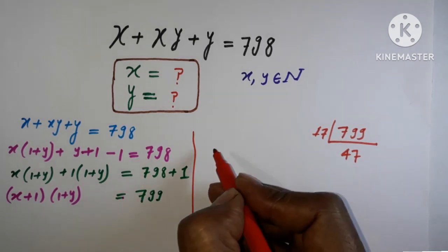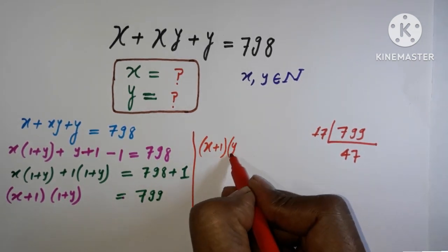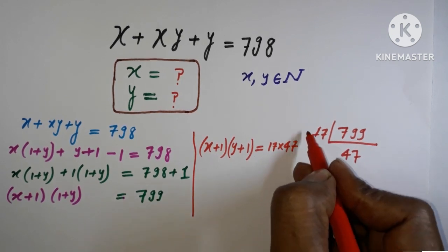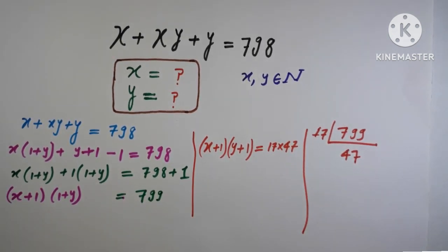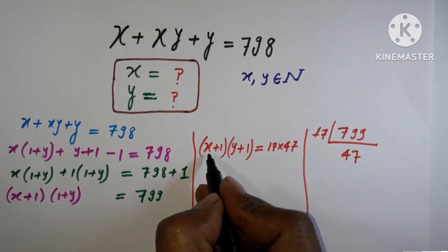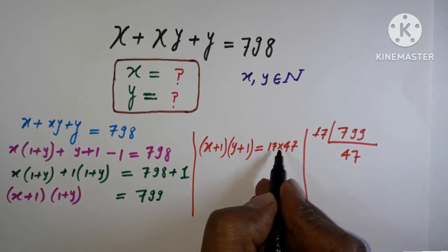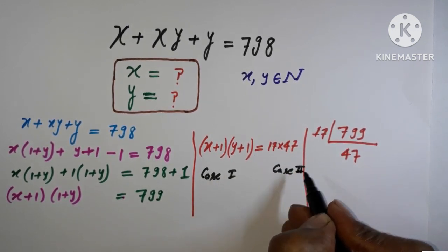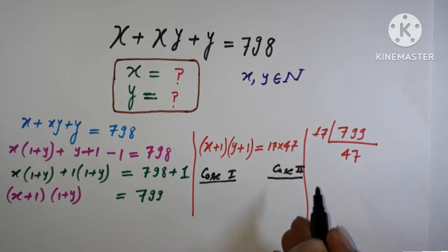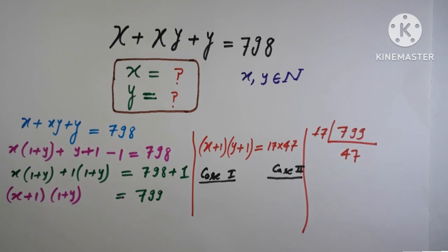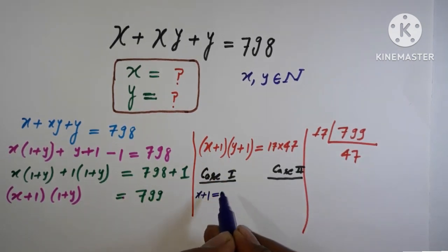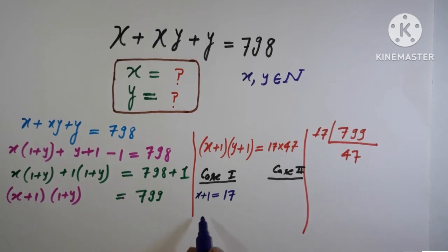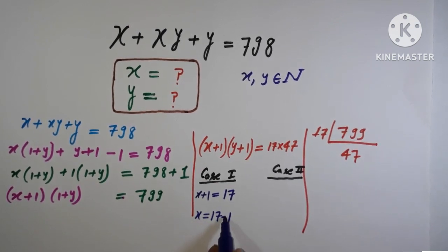So we write (x plus 1)(y plus 1) equals 17 times 47. We have two cases. In Case 1, x plus 1 equals 17, so x equals 17 minus 1, which gives x equal to 16.